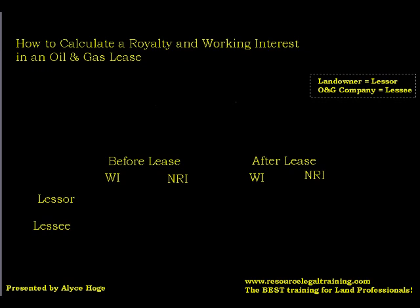We'll start with a couple of basic definitions. The landowner is also known as the lessor — you will frequently hear them referred to as lessor. 'Lessor' kind of rhymes with 'landowner,' and that's one easy way to remember it. The oil and gas company is also known as the lessee. 'Company' rhymes with 'lessee' — that's an easy way to remember it.